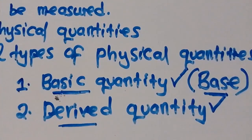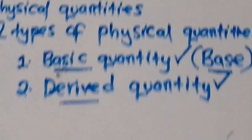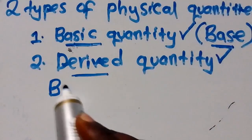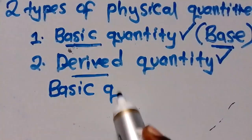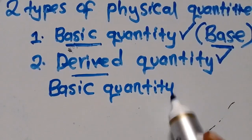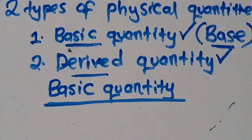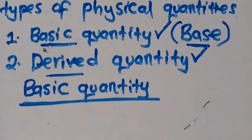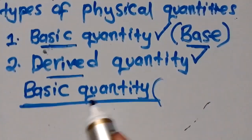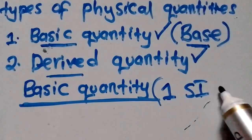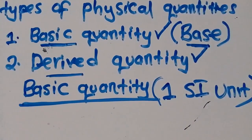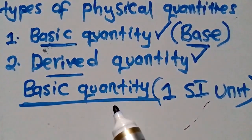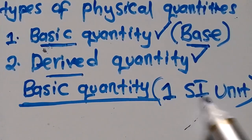Let us now look at basic quantities. I want to make physics very simple — this is the foundation that we need. So under basic quantities, there are a few things you need to know. Whenever we are talking about basic quantities, these are quantities which only have one SI unit. A basic quantity is a quantity which only has one SI unit.